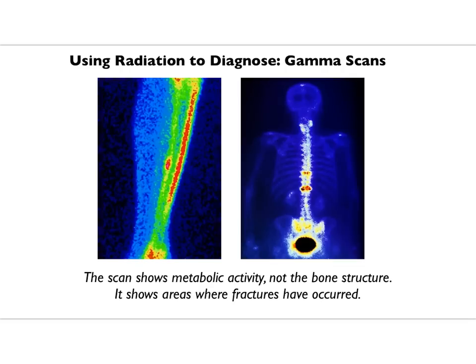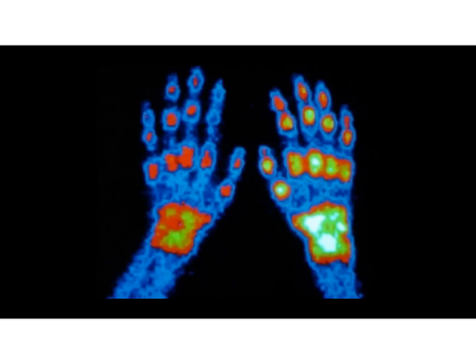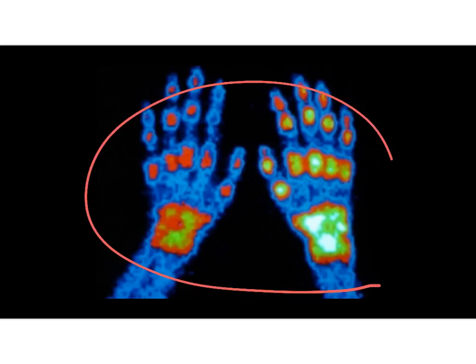Here are a couple more gamma scans. This is a person's leg where there was a fracture and bone growth is happening. This person had a couple of spinal fractures, and you can image them using gamma scans to find things that won't show up on x-rays. And that bone scan image we started the class with — a person's hands — it's showing lots of arthritis, lots of growth concentrated in the isotope due to arthritis in this person's hand.